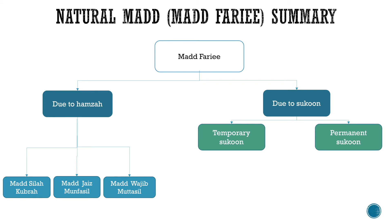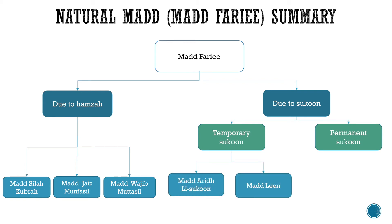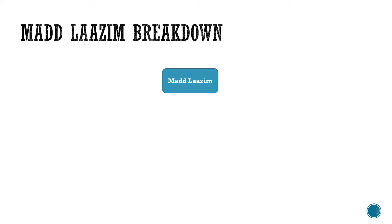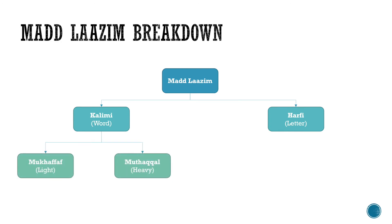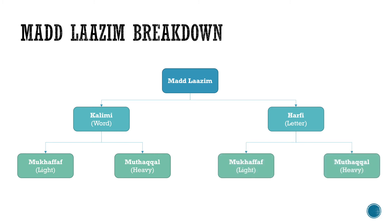مَدْ بِسَبَبِ السُّكُون consists of two types: the temporary سُكُون and the permanent سُكُون. The temporary سُكُون has two more types: مَدْ عَارِضْ السُّكُون and مَدْ لِيْن. The permanent سُكُون has مَدْ لَازِمْ. There are two types of مَدْ لَازِمْ: مَدْ لَازِمْ كَلَمِي and مَدْ لَازِمْ حَرْفِي. مَدْ لَازِمْ كَلَمِي also has مُخَفَّف and مُثَقَّل, and the same for حَرْفِي — it has مُخَفَّف and مُثَقَّل.